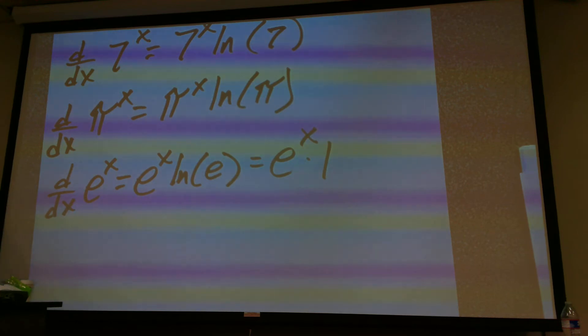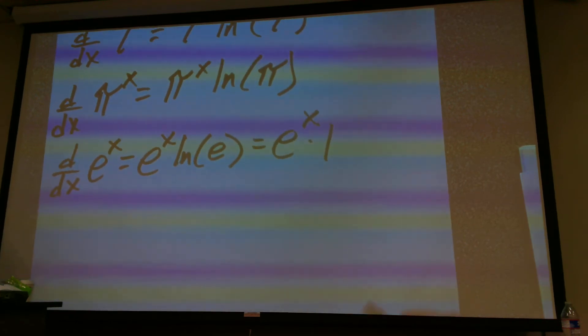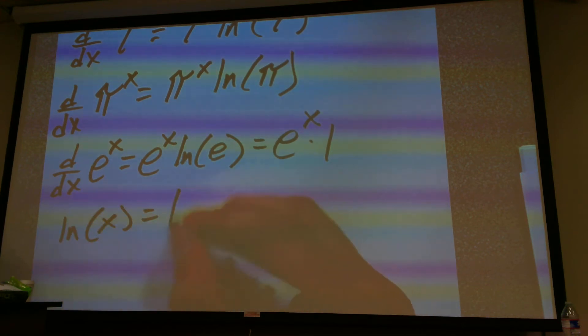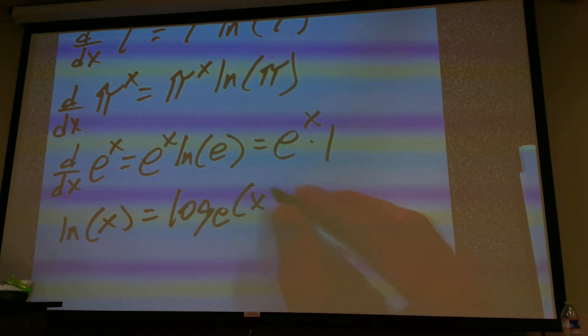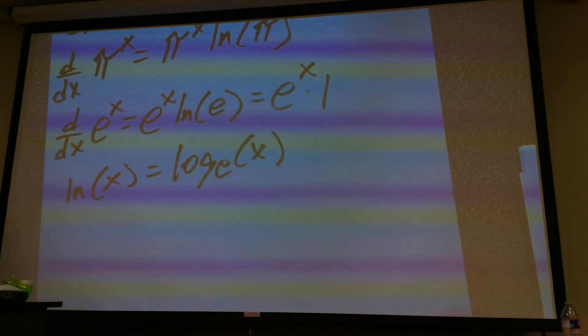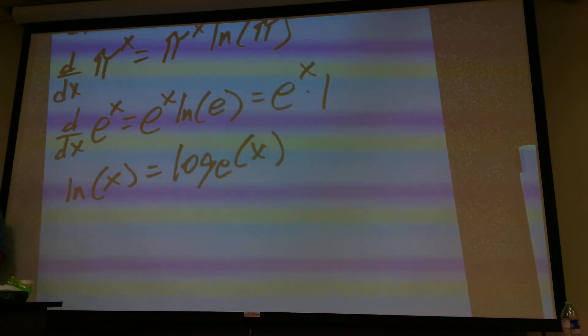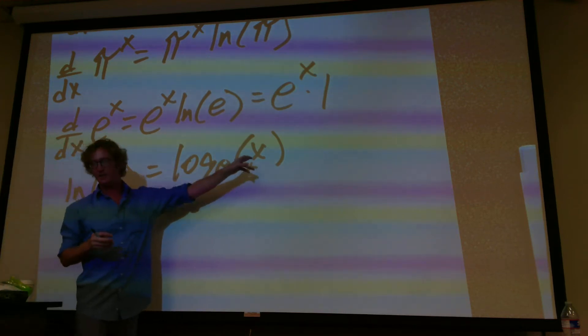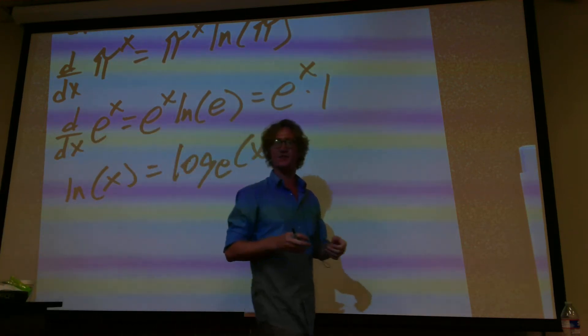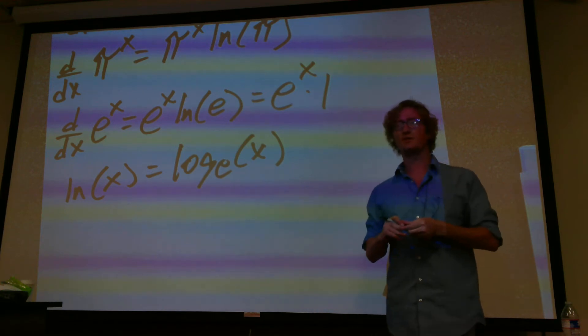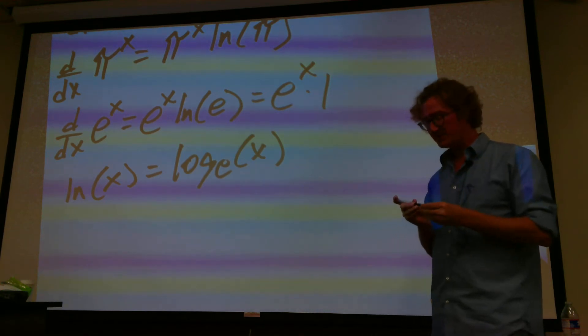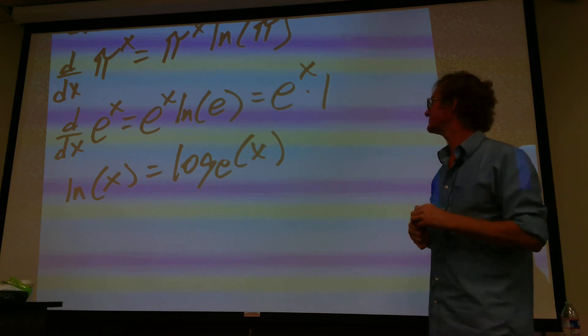So, in case some of y'all don't remember, the natural log of x is really just log base e of x. So, if you have a log base e and e right here, what are they going to do? They're going to cancel each other out. And so, that's why the natural log of e to the 1 just becomes 1.